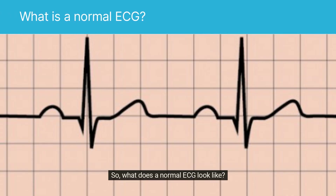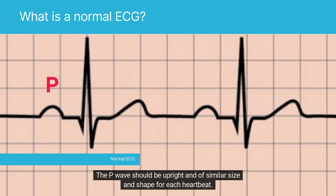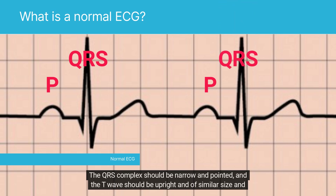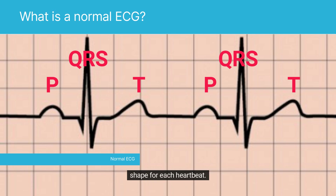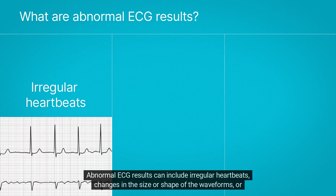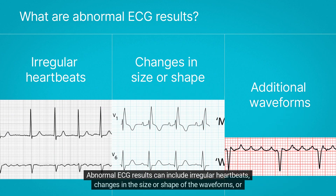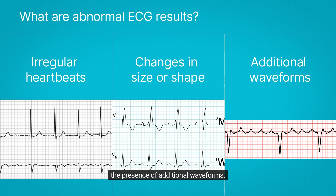So what does a normal ECG look like? A normal ECG should have a consistent and regular waveform with no abnormalities. The P-wave should be upright and of similar size and shape for each heartbeat. The QRS complex should be narrow and pointed, and the T-wave should be upright and of similar size and shape for each heartbeat. If your ECG results are abnormal, it may indicate an issue with your heart's electrical activity. Abnormal ECG results can include irregular heartbeats, changes in the size or shape of the waveforms, or the presence of additional waveforms.